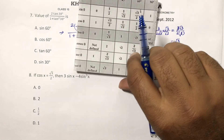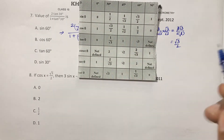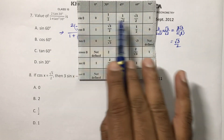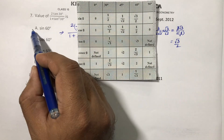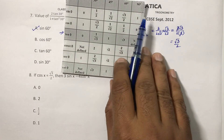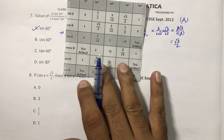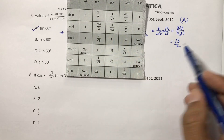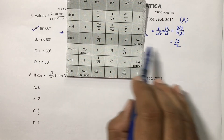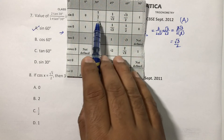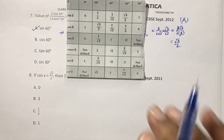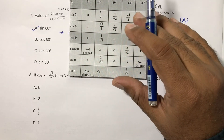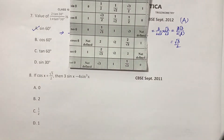So the value is root 3 by 2. Checking the options: sin 60 is root 3 by 2. So the correct option is A. Cos 60 is 1 by 2, tan 60 is root 3, sin 30 is 1 by 2 — none of those match. You need to know the trigonometry ratios table to solve these multiple choice questions.